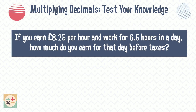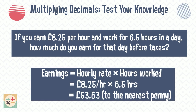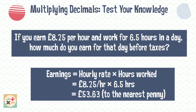Question seven: if you earn £8.25 per hour and work for 6.5 hours in a day, how much do you earn for that day before taxes? To calculate the total earnings, multiply the hourly rate by the hours worked. This gives us total earnings of £53.63 — this answer has been rounded to the nearest penny.